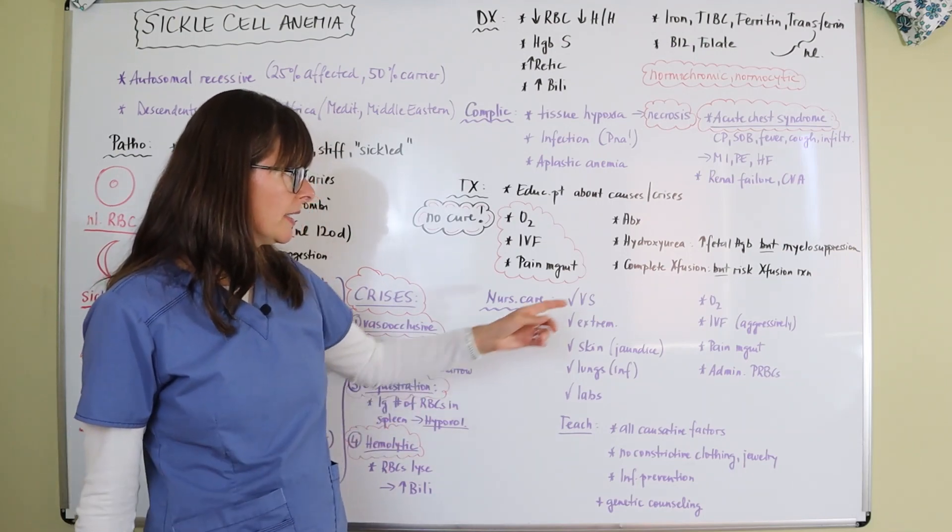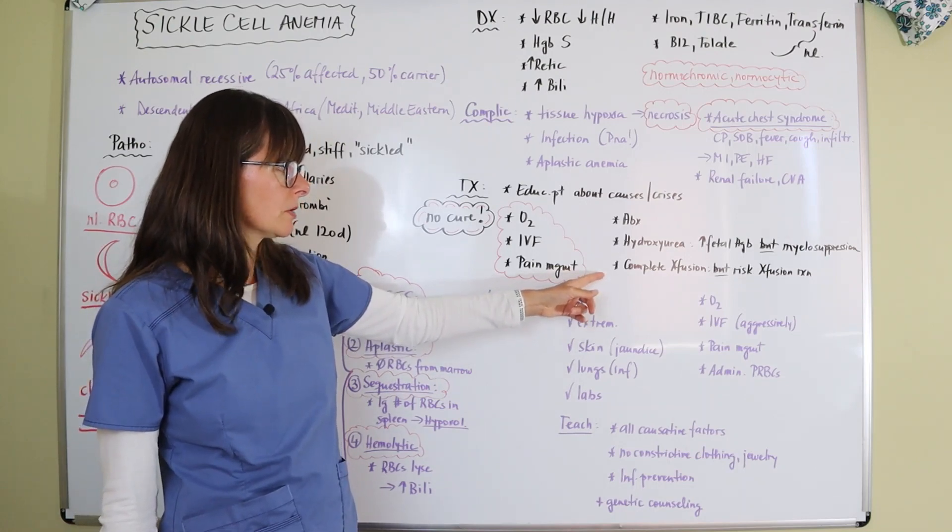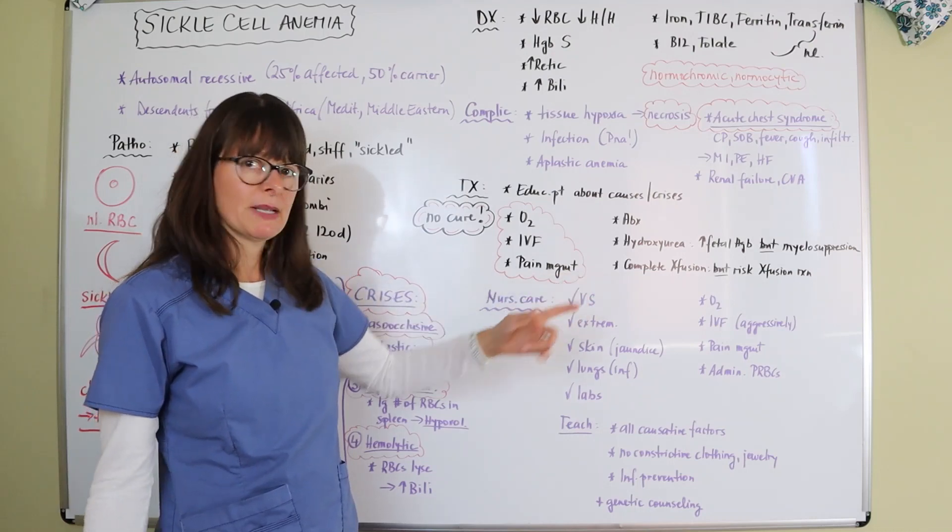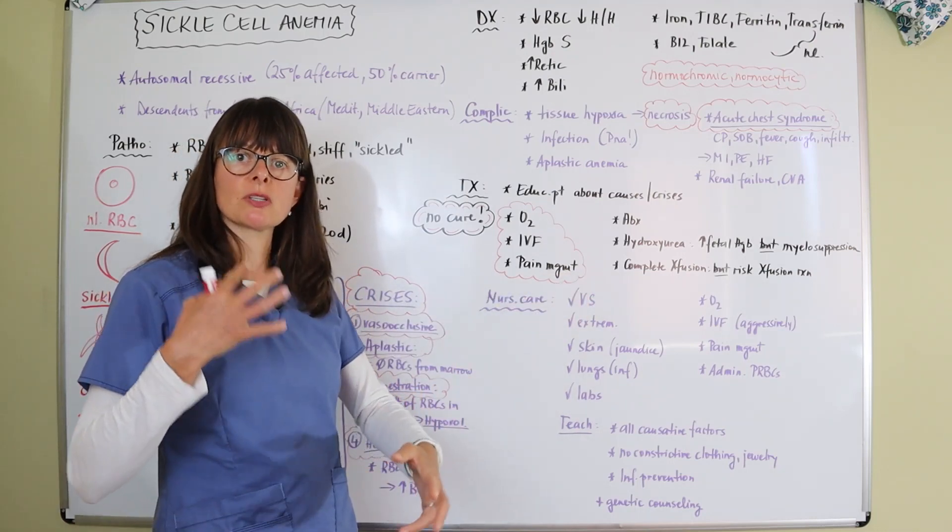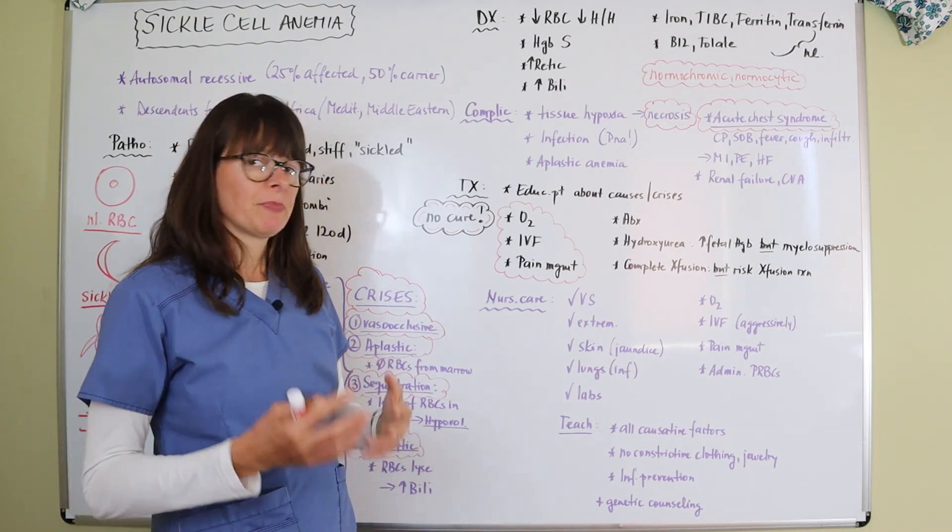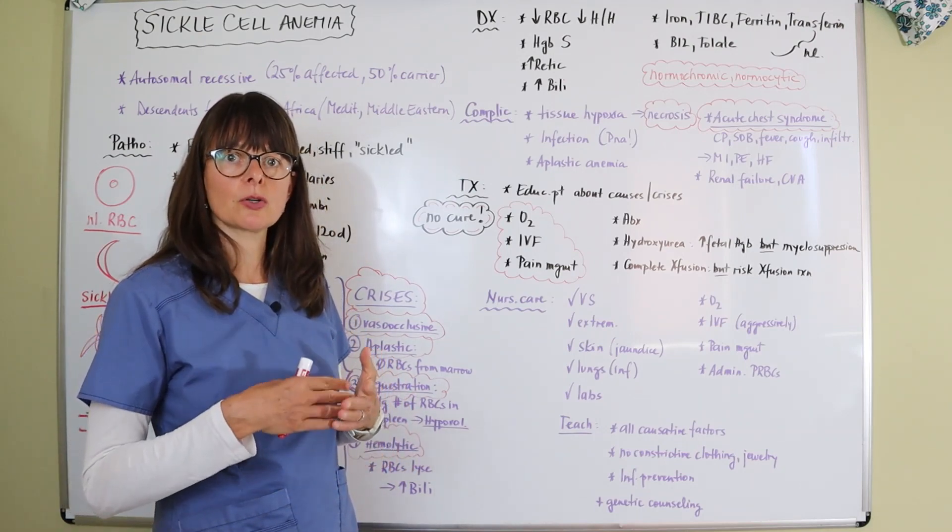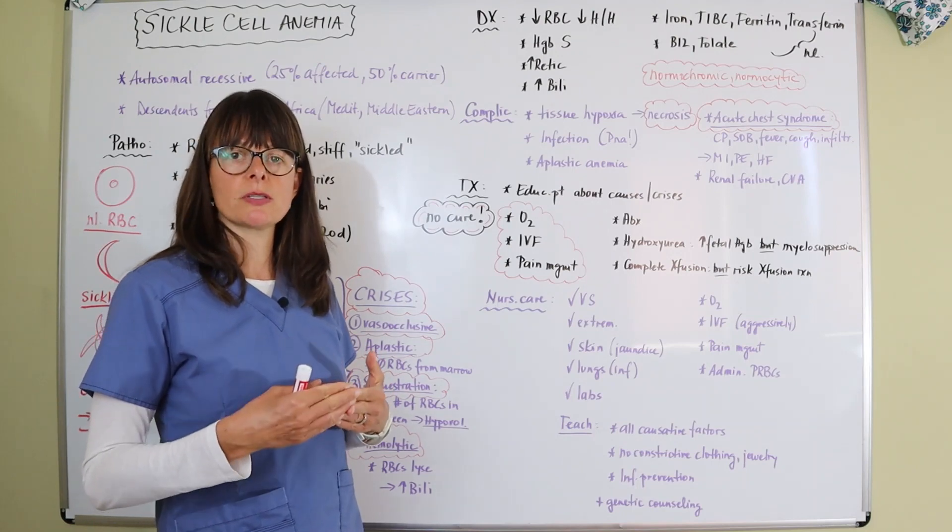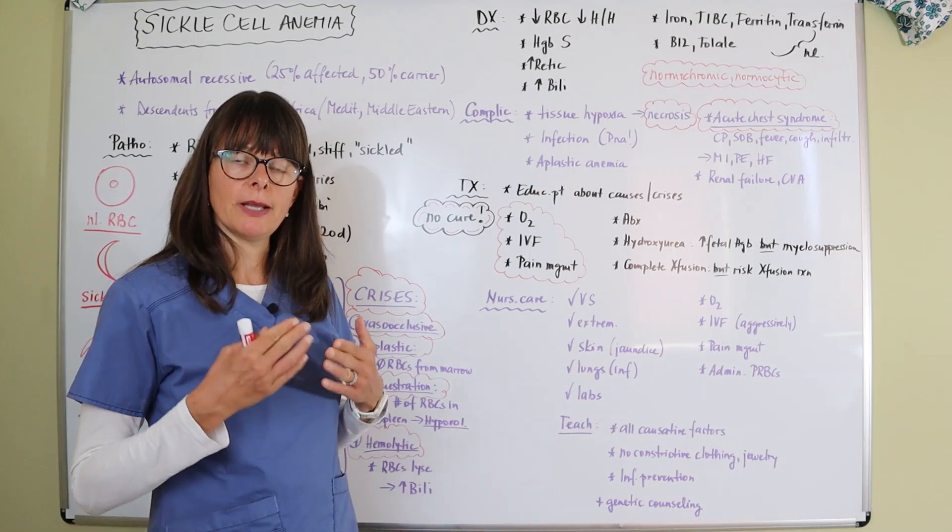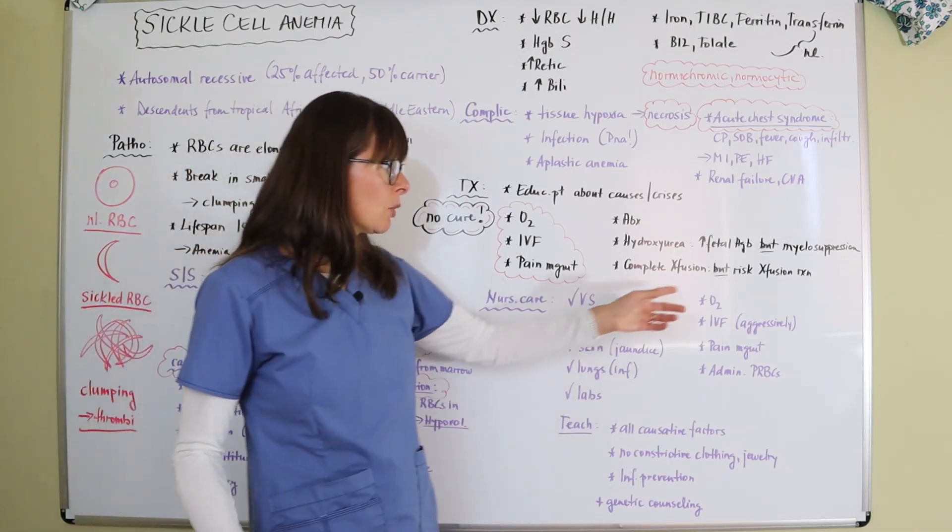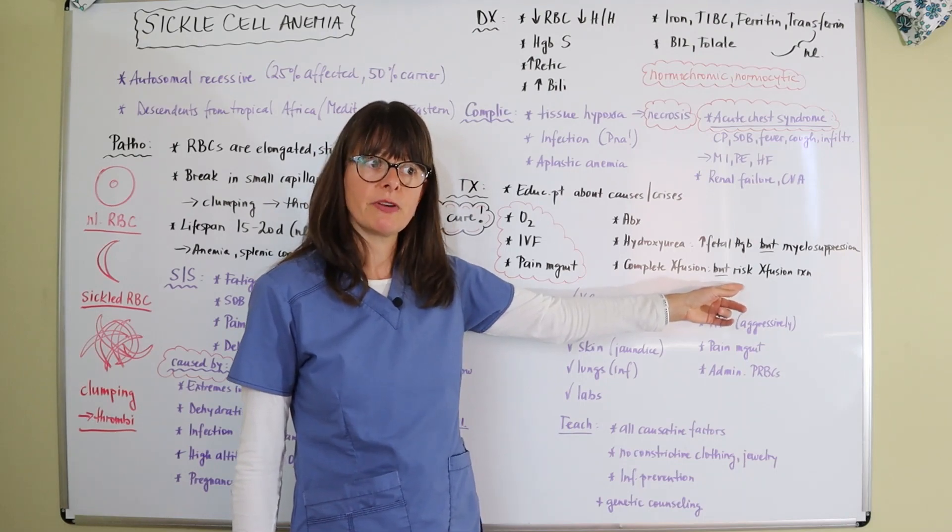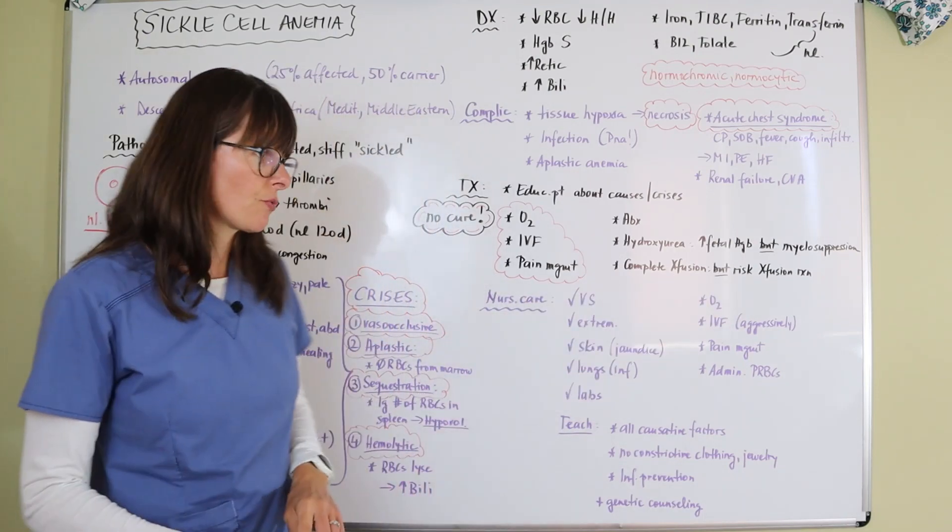And then the other thing that is possible is a complete blood transfusion where basically the patient's sickle cells are exchanged for normal cells through the methods of transfusion. And this is something that can only occur so many times because the more transfusions a patient has, the more likely they are to develop antibodies and the more likely they are to develop transfusion reactions. And I have a separate video that goes over blood transfusion reactions.